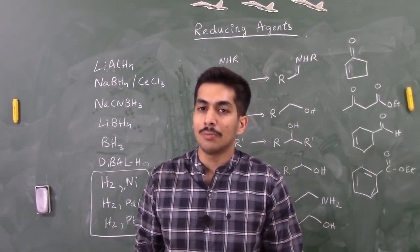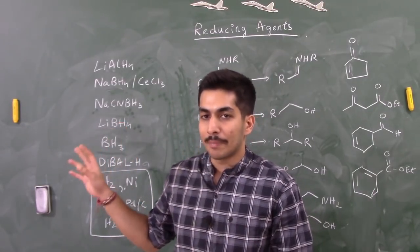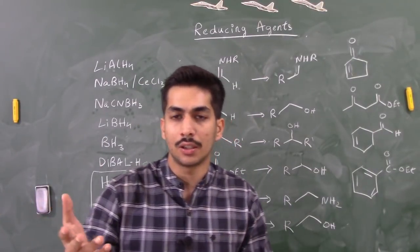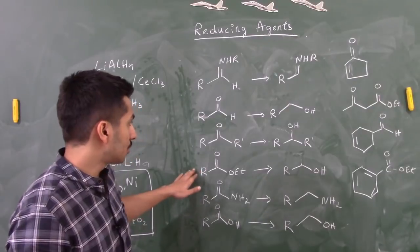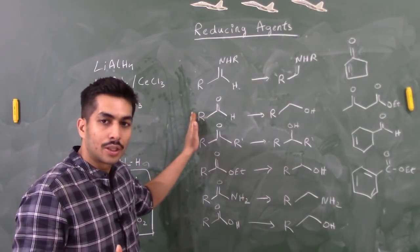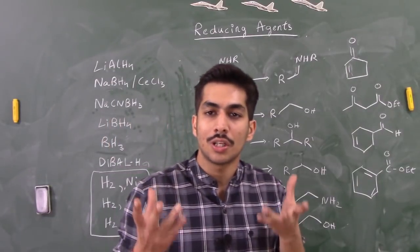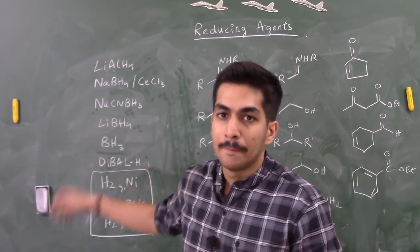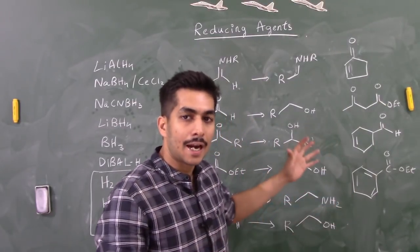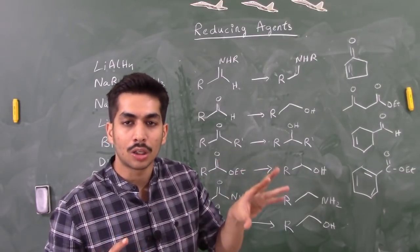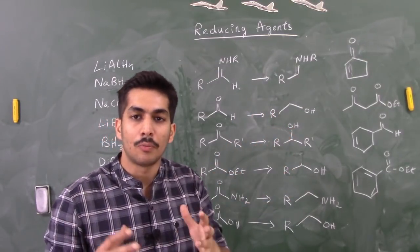DIBAL-H stands for diisobutylaluminium hydride and contains an aluminium-hydrogen bond. At minus 78 degrees Celsius, it converts an ester to an aldehyde. In some cases LiAlH4 can also do this at very low temperatures, but the most appropriate reagent for converting an ester to an aldehyde is DIBAL-H. In the next video, we'll take specific substrates and determine which reagents are most appropriate to obtain particular products.